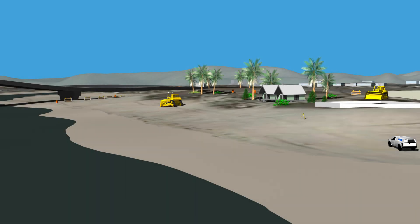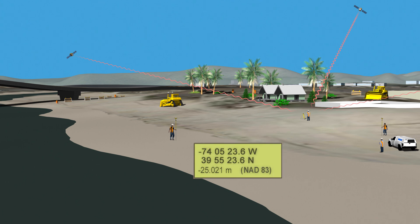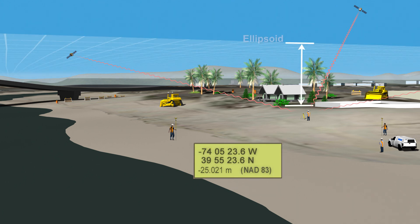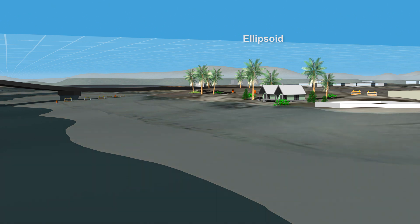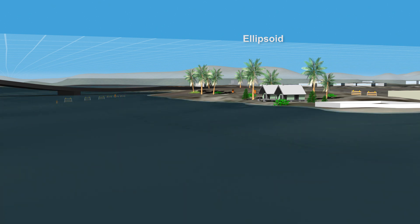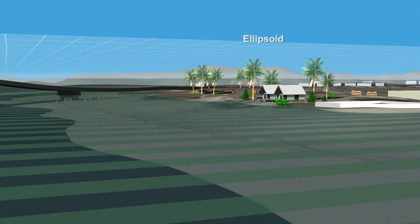Now, turning our attention to onshore construction. Before a new house is built, a surveyor needs to make sure the foundation is built above the high-risk floodplain. The surveyor uses professional GPS equipment to compute a highly accurate height of the ground, relative to the ellipsoid reference frame. Based on the survey, we know the base of our house is 25 meters below the ellipsoid. But what does that tell us about the floodplain? Unfortunately, ellipsoidal reference frames do not accurately represent topography or gravity.